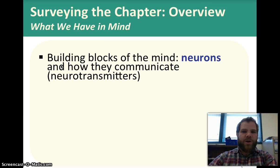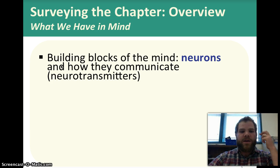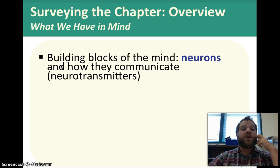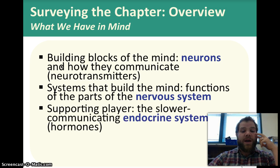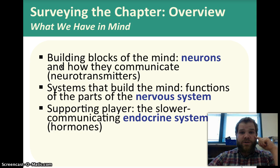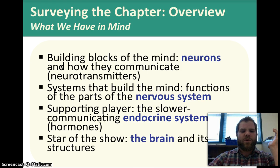Here's a quick overview of what we're going to cover in this chapter. Today we'll look at the building blocks of the mind — namely neurons — and how they communicate via neurotransmitters. Tomorrow we'll look at systems that build the mind, functions of the parts of the nervous system, the endocrine system with all its hormones, and then the star of the show: the brain and its structures.